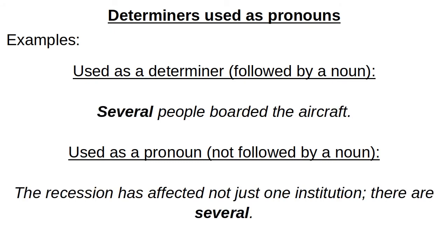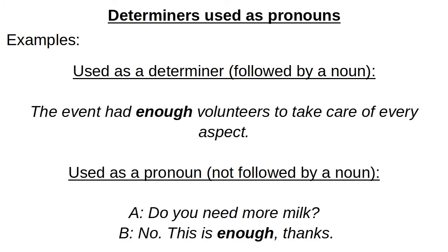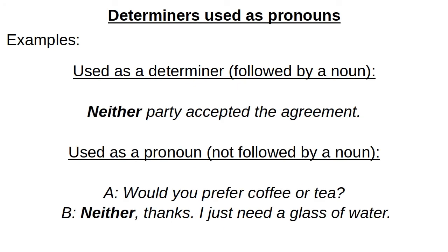Another example: 'several people boarded the aircraft' — 'several' is the determiner and 'people' is the noun. Used as a pronoun: 'the recession has affected not just one institution — there are several.' Also: 'the event had enough volunteers to take care of every aspect' — 'enough' is used as a determiner. As a pronoun: 'do you need more milk? No, this is enough, thanks.' 'Neither party accepted the agreement' — 'neither' is the determiner. As a pronoun: 'would you prefer coffee or tea? Neither, thanks. I just need a glass of water.'